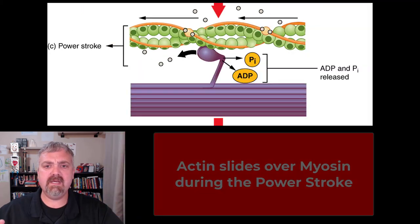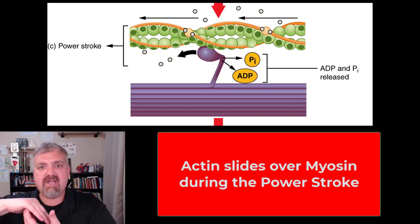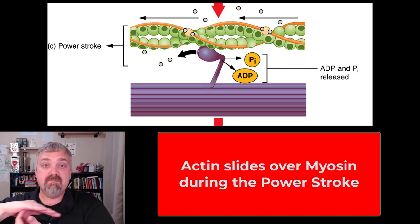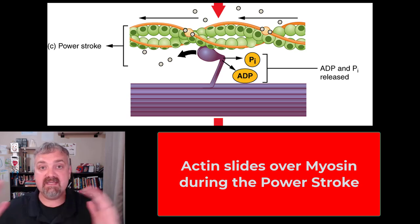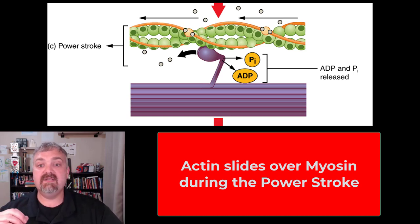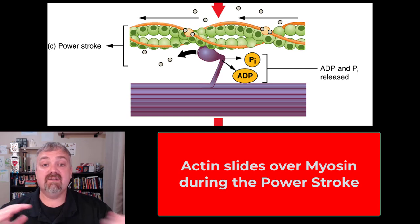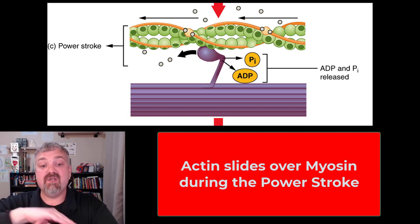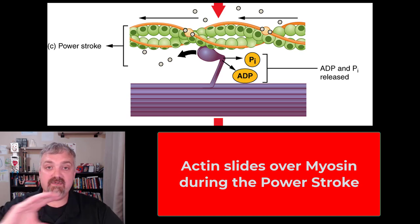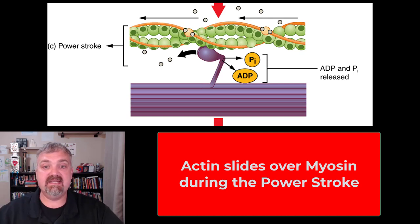Once the cross bridge is formed, you see the sliding filament in action: myosin is pulling actin over it, so the actin slides on top of myosin as it's pulled toward the center of the sarcomere. This actual movement is called the power stroke — that's what that term refers to — and as you can see, it requires ATP.